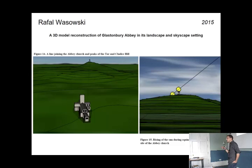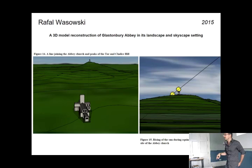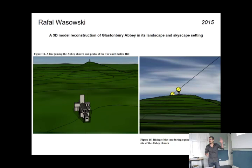The first of these newer projects is Rafal's. No one has ever done this in the module before: he did a 3D model reconstruction of Glastonbury Abbey in the proper landscape and skyscape, and used it to experiment and find something about it. He went to the site, took measurements, bought books and reconstruction images, obtained the ground plans, and built this from the ground up. You can see the alignment joining the Abbey Church, the Tor, and Chalice Hill.